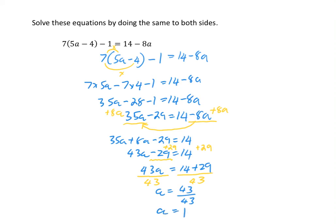By simplifying my original equation, moving my unknown variables to one side, and applying a series of inverse operations, I can determine that a in my original equation is equal to 1.